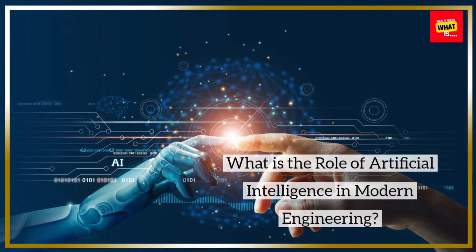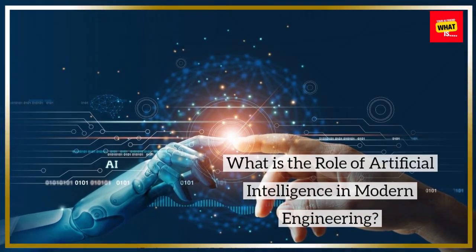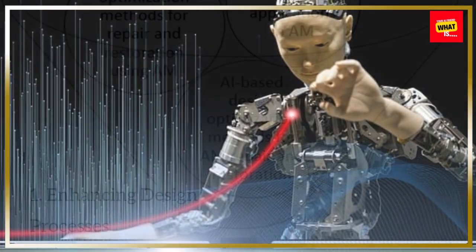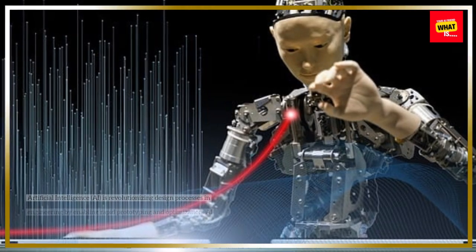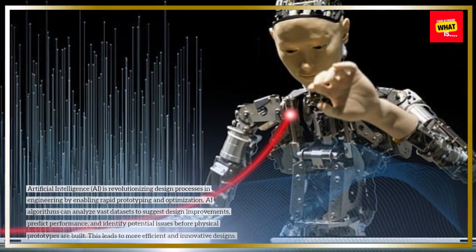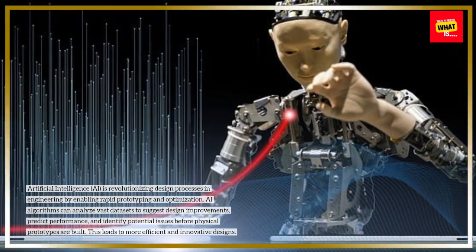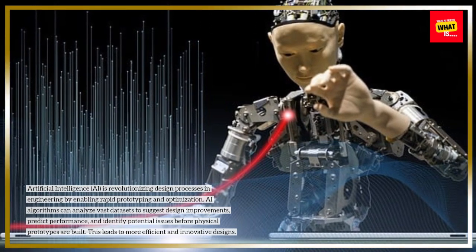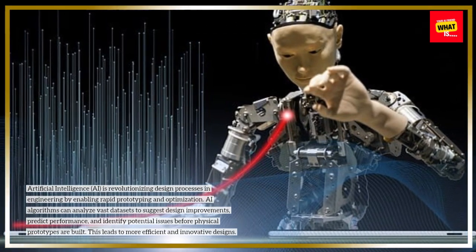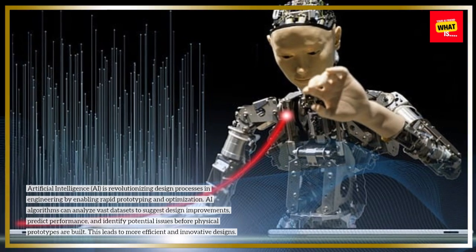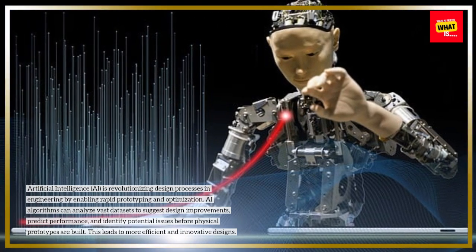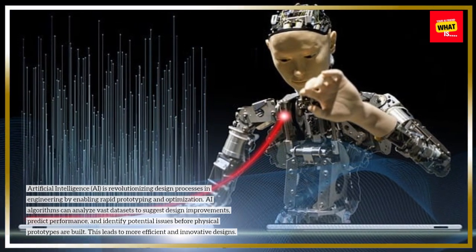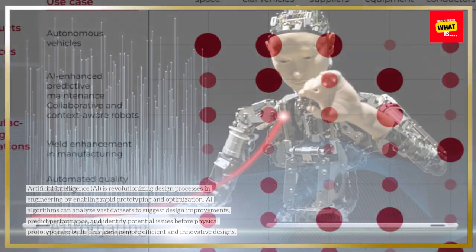What is the role of artificial intelligence in modern engineering? Enhancing design processes: Artificial intelligence is revolutionizing design processes in engineering by enabling rapid prototyping and optimization. AI algorithms can analyze vast datasets to suggest design improvements, predict performance, and identify potential issues before physical prototypes are built. This leads to more efficient and innovative designs.